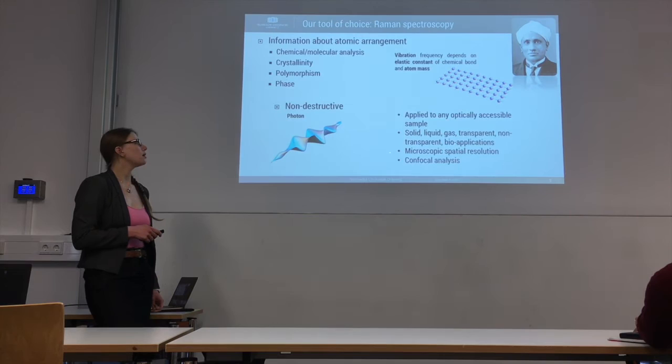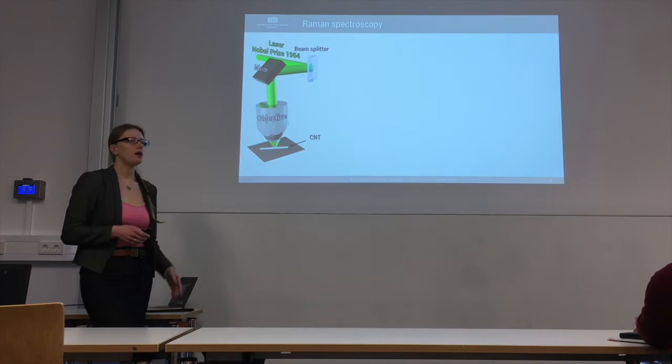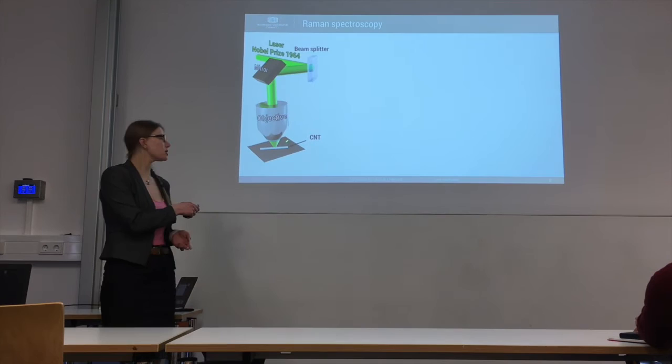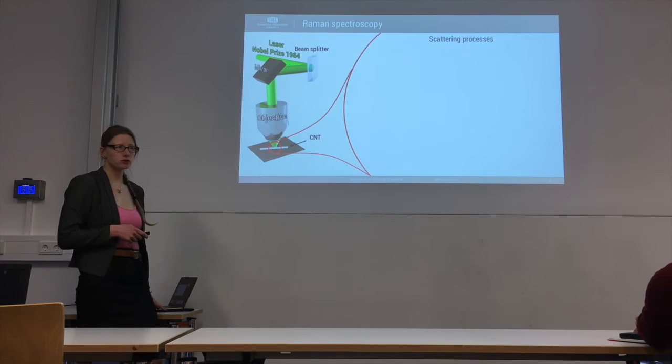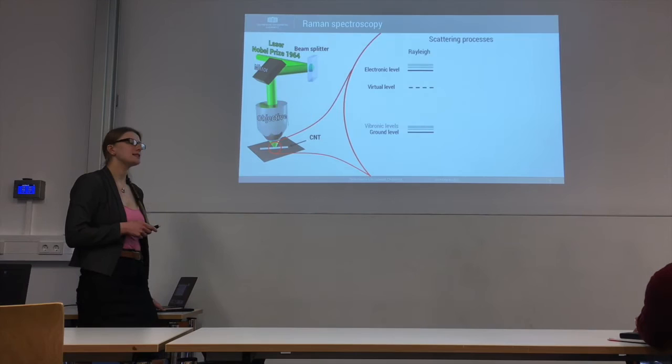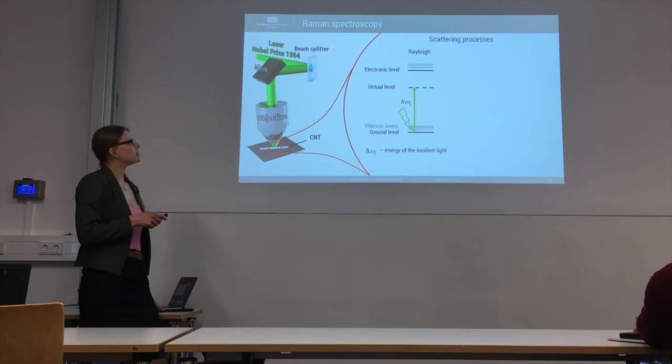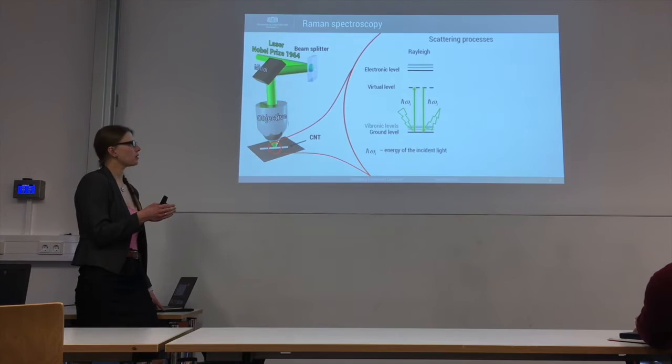Experimentally, we take a laser beam and focus it with an objective on our sample. For example, let's consider a carbon nanotube, which is a rolled-up graphene shape. In the carbon nanotube, there are several scattering processes which happen. The dominant one is so-called Rayleigh scattering — it is elastic scattering, which means that the incident photon excites the system to a virtual state, and then the system relaxes back to the ground state by scattering a photon with the same energy as the incident one.